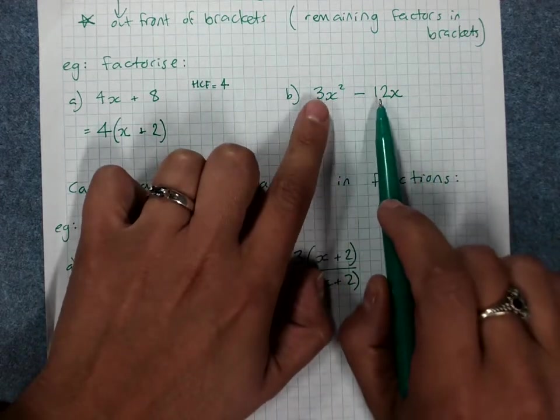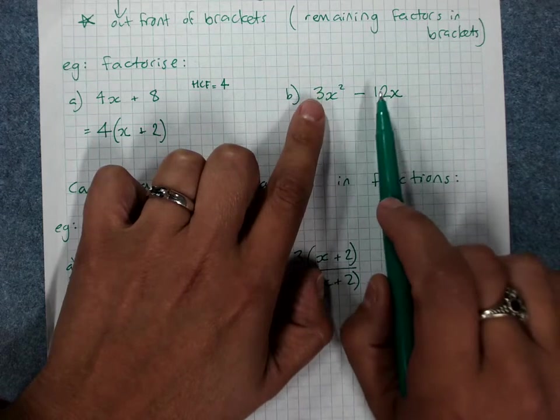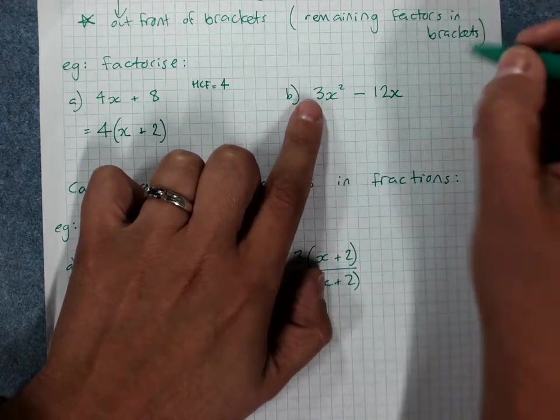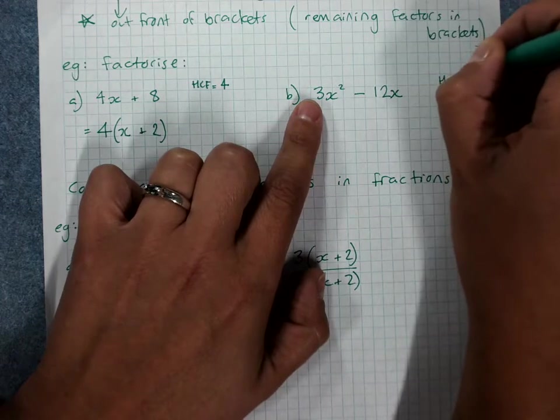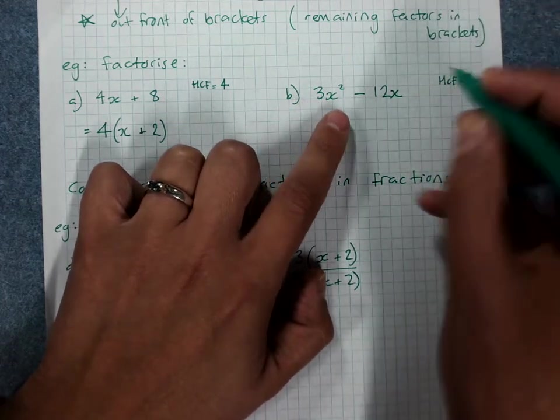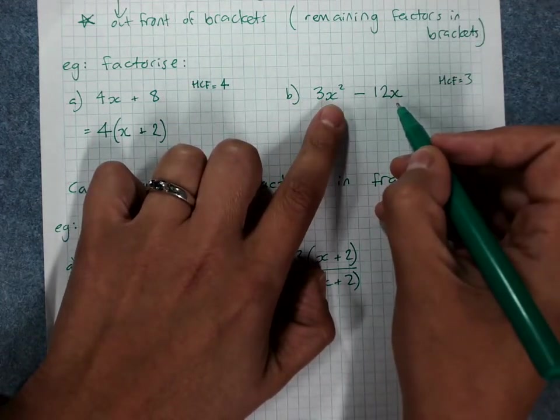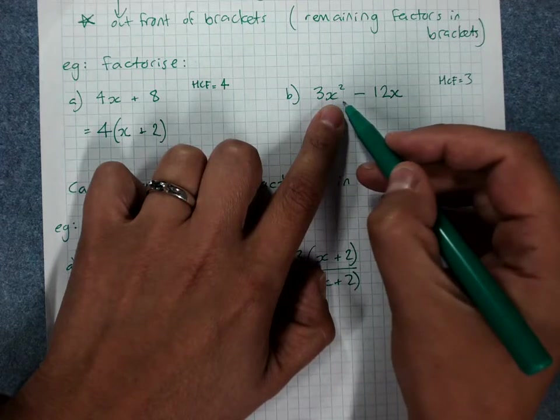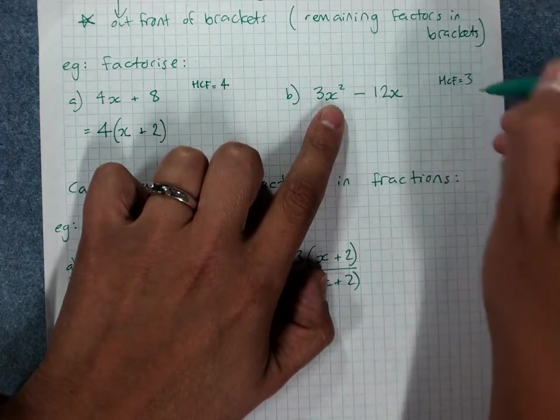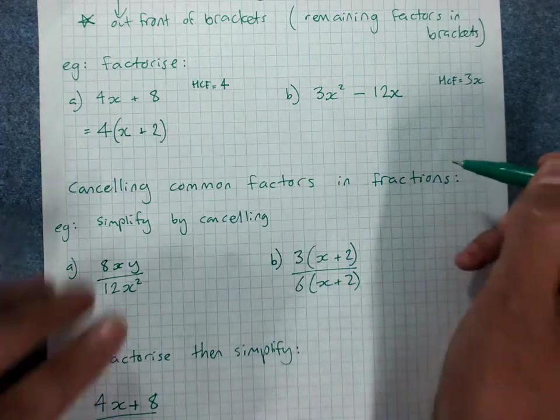Check for the highest common factor of the numbers. Does 3 go into 12? Yes it does. So the HCF will be 3, but there's also an x in both of them. Now there's x times x here, but there's only x here, so I can have just one lot of x there.